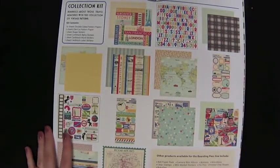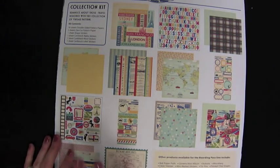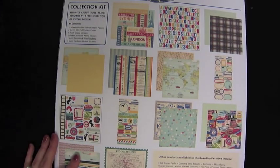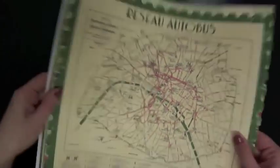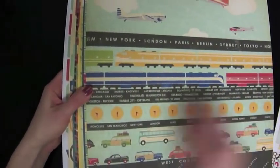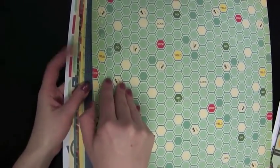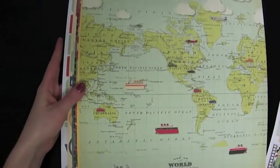Lastly I'm going to show you the paper collections. The first one is the boarding pass collection from October Afternoon. This has been really popular. It says reminisce about those travel memories with this collection of vintage patterns. Vintage is kind of their thing. I'll just briefly go through the patterns here. You get a couple of each, different modes of transportation, they have a cream background, they use a lot of distressing of the bold colors.